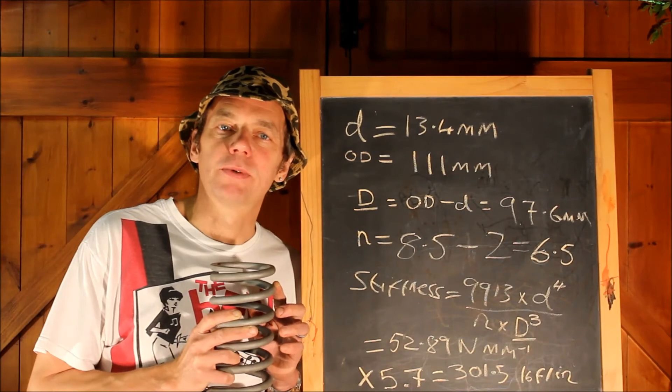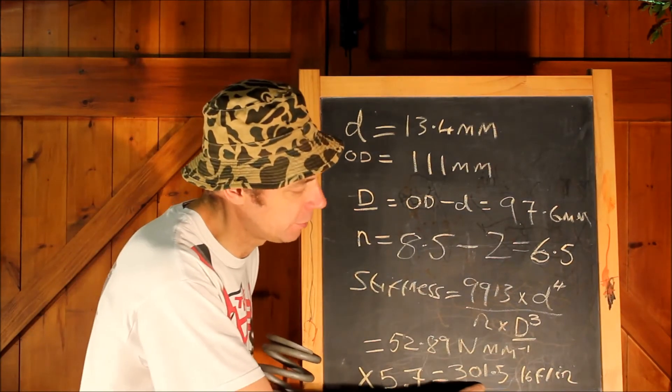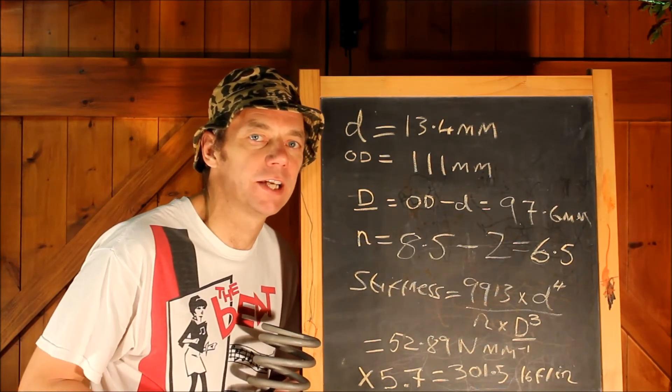And that spring, which is the front suspension spring off the Lotus Elan, is nominally 300 pounds per inch. So you can see we are pretty much bang on the money there just by a couple of simple measurements and a bit of calculation.